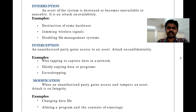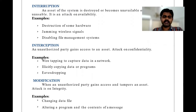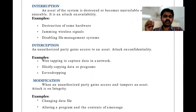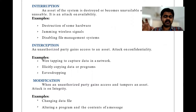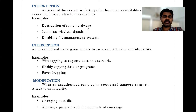The second one is interception. What is interception? An unauthorized party gains access to an asset. For example, if you're working in a company you are an authorized person, but someone not belonging to your company is an unauthorized person. If that unauthorized person gains access to your asset — your information — that is an attack on confidentiality, which is nothing but interception.